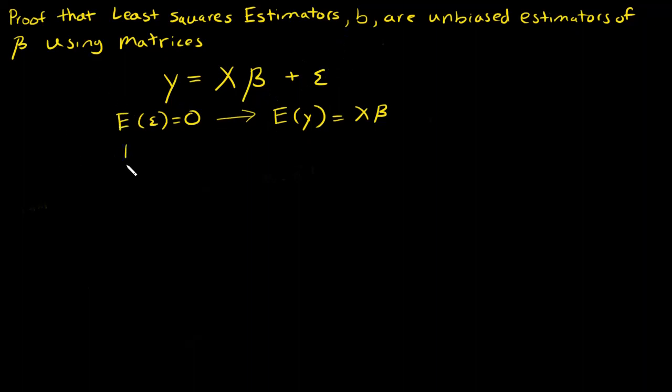In the previous video we showed that the least squares estimator is B, which equals x transpose x inverse times x transpose times y.